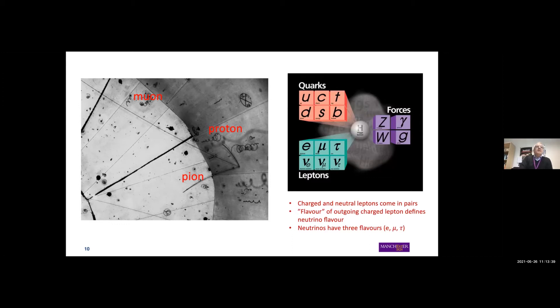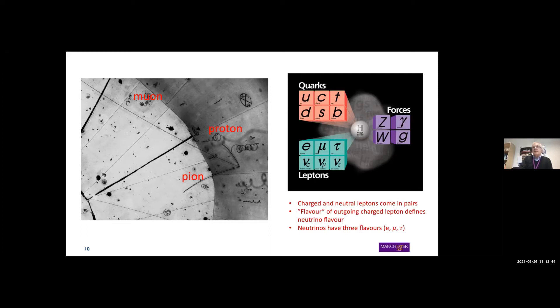How do we know this is a muon neutrino — a different type from the one in beta decay? Our model of how neutrinos fit into the Standard Model shows quarks and leptons coming in three generations, the forces exchanged by bosons, and the Higgs — discovered at CERN 10 years ago — governing the mass mechanism. Neutrinos come in three flavors, and flavor is identified for practical purposes by the charged lepton produced. When we say 'muon neutrino,' it means it produced a muon — that is how we identify and define the flavor.